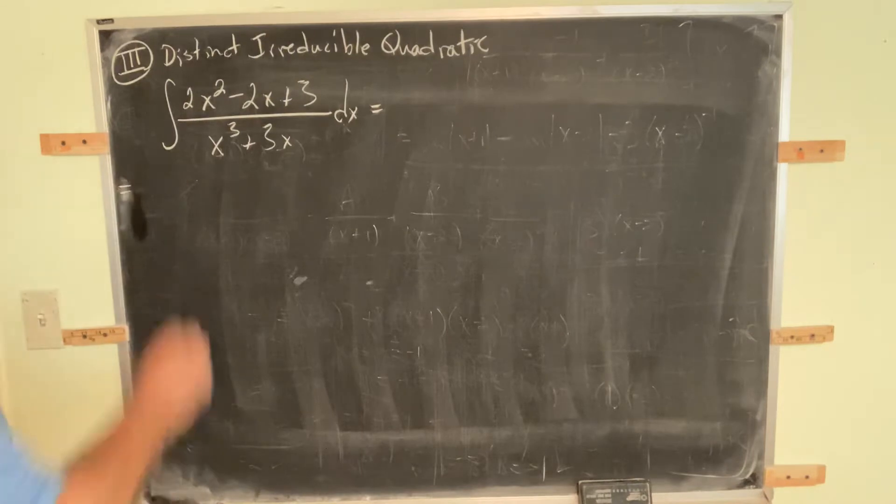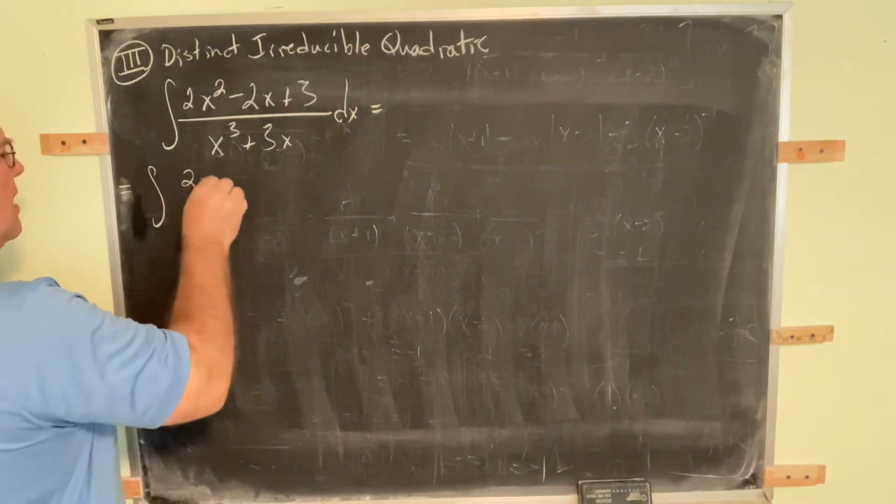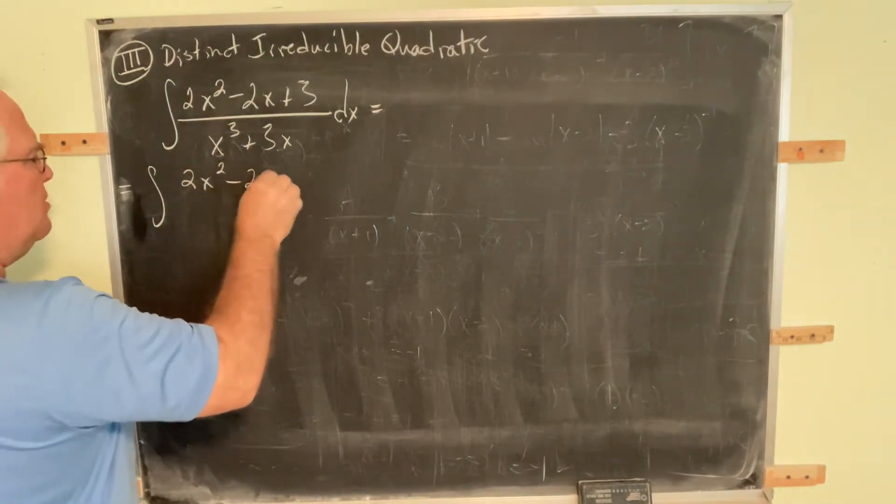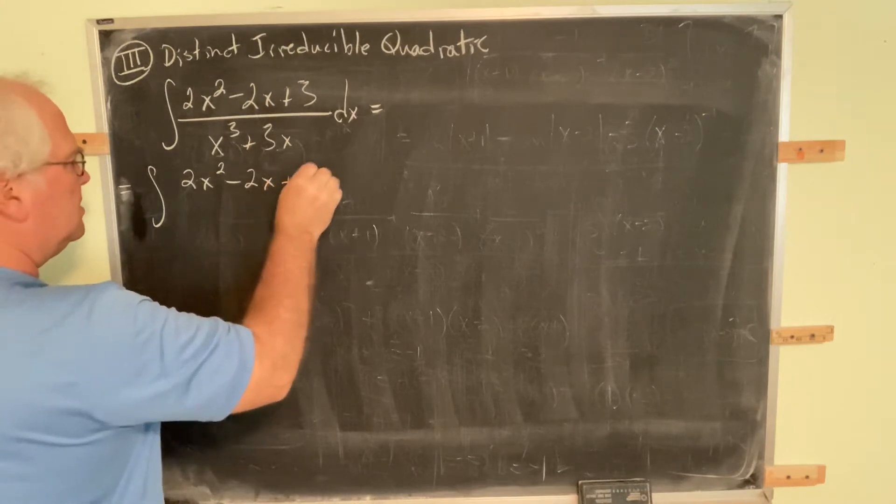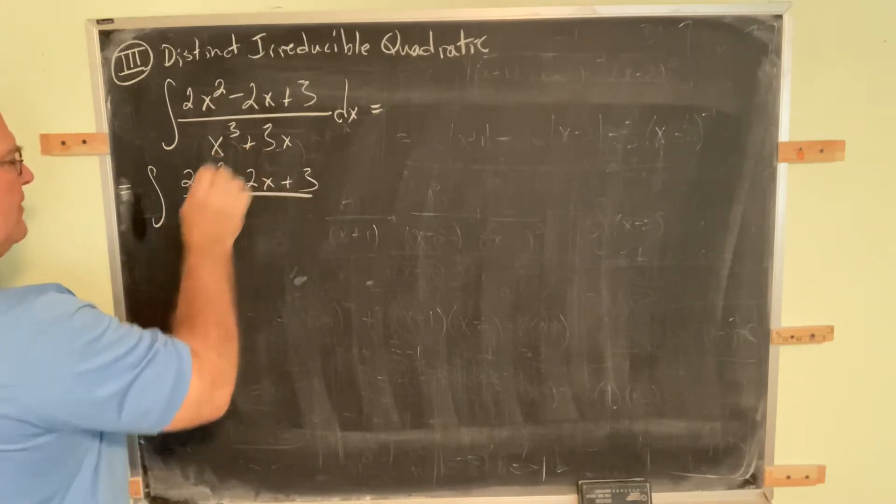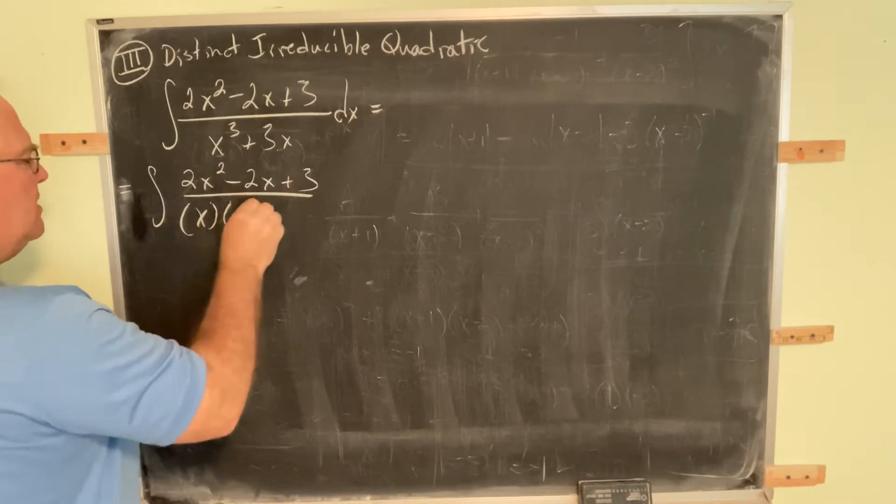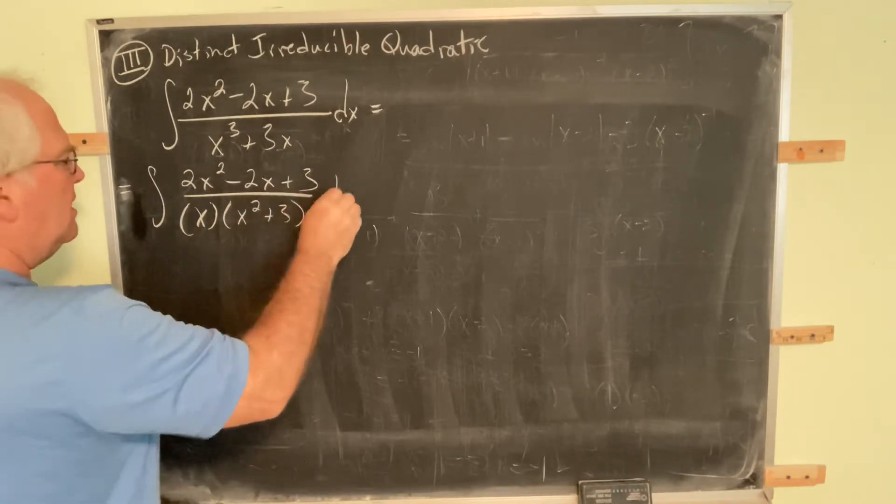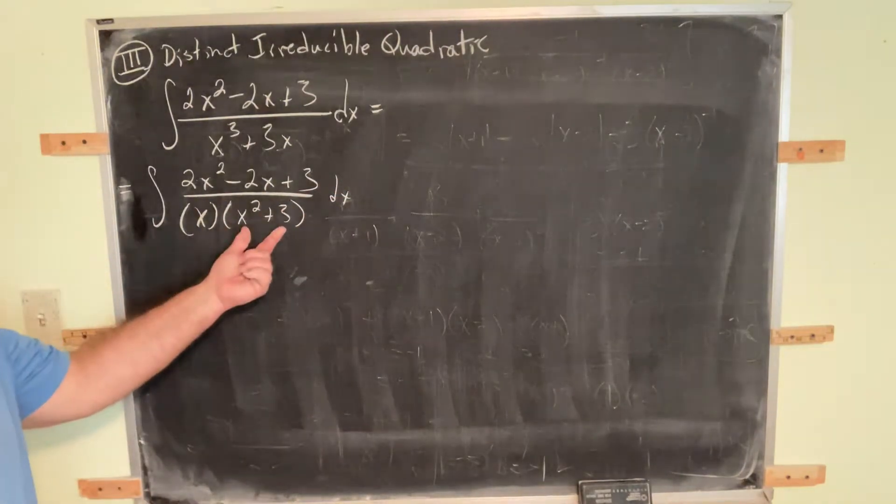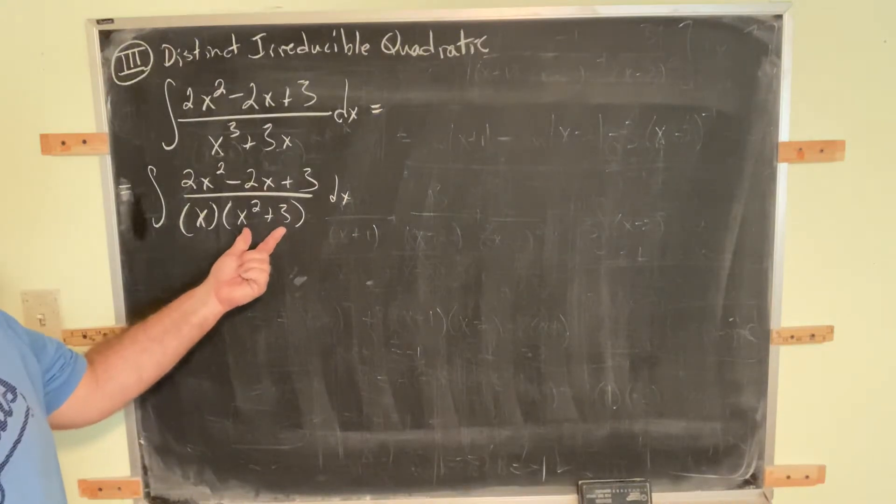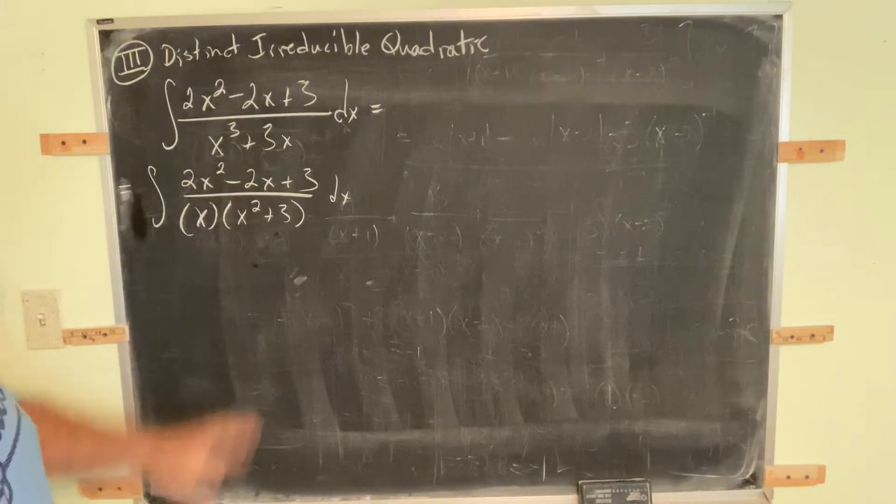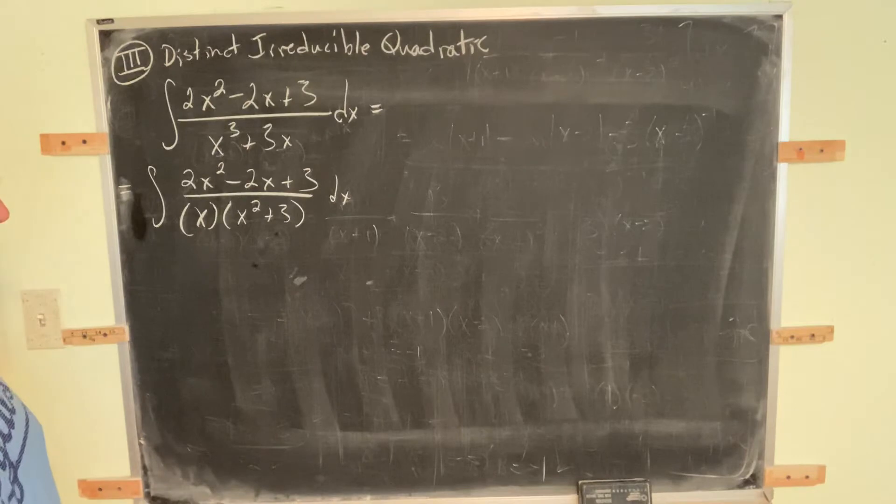I'm going to factor this denominator. Notice it doesn't matter if the numerator factors, in fact very often it won't. I'm going to factor out the x, leaving behind x to the second plus 3. And notice this is quadratic, it does not factor. This is an irreducible quadratic expression.